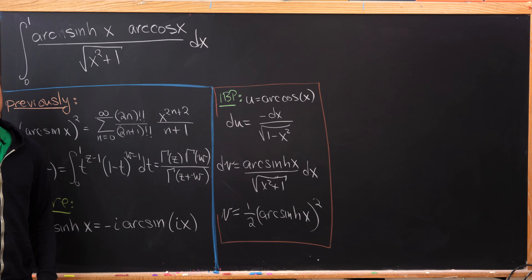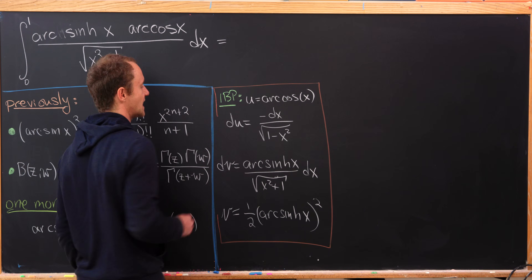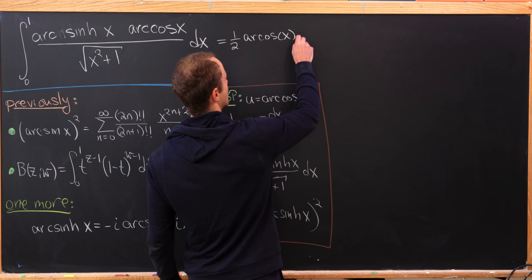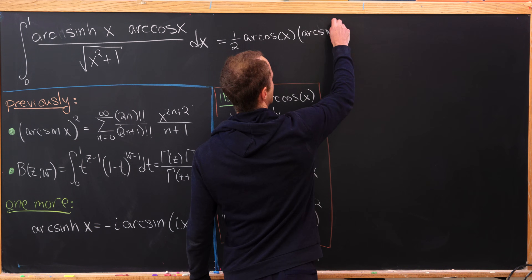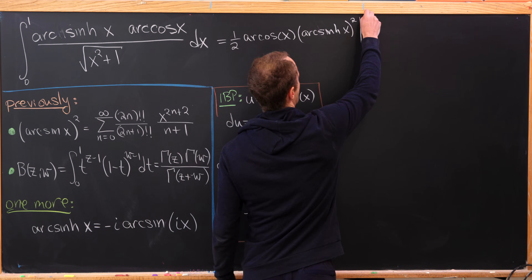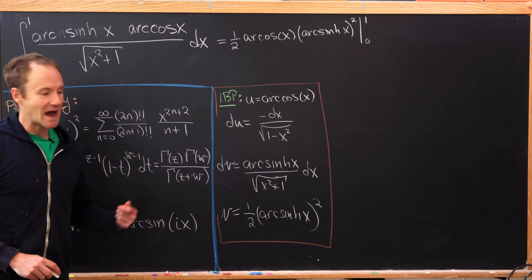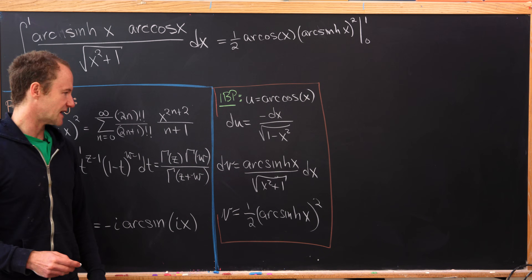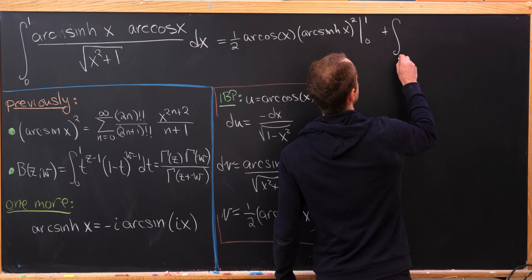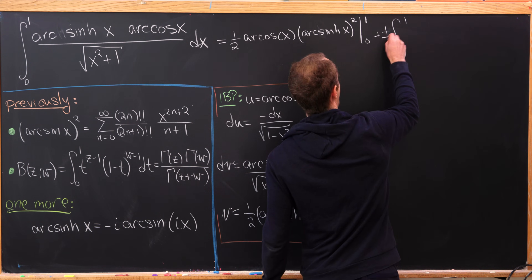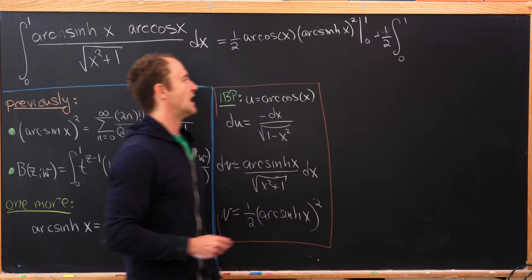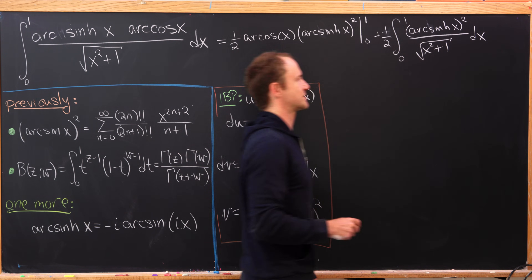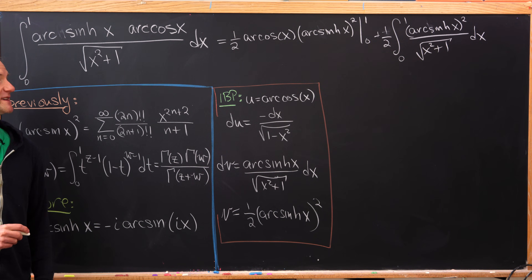With integration by parts set up, this turns into u times v: one-half times arc cosine of x times (inverse hyperbolic sine of x) squared, evaluated from 0 to 1. Then minus the integral of v du — but the minus sign and the minus from du cancel, giving us plus one-half times the integral from 0 to 1 of the inverse hyperbolic sine squared over the square root of x squared plus 1.